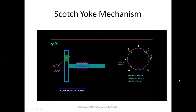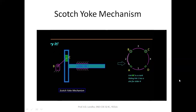Let us see how the links and pairs in the schematic diagram map to the physical mechanism. Link number two is fixed. On it, we have a fully rotating pin B which holds the crank DC. Attached to the crank is link number four, the green link. Link four slides within link one — the blue T-shaped link — and ultimately link one slides in a slot in the fixed link.